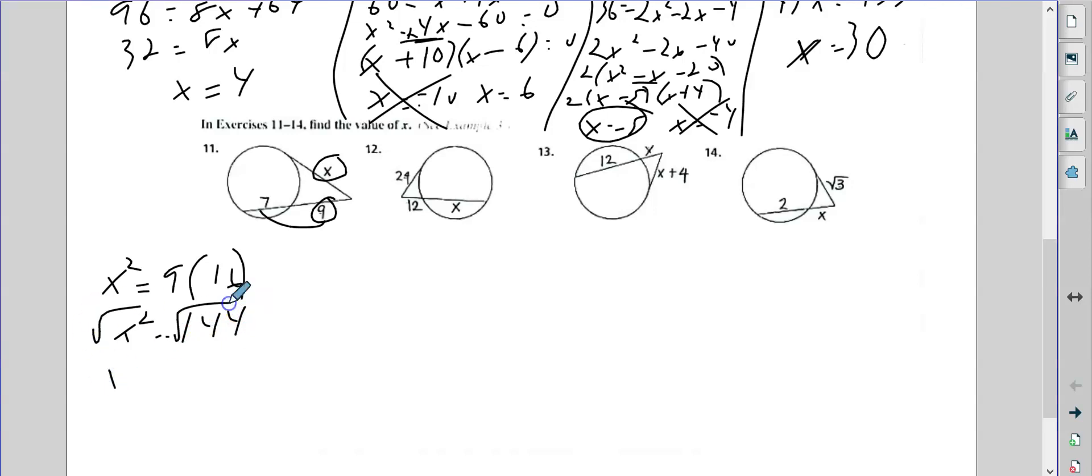You square root both sides. x equals 12. x equals negative 12. But again, we cannot have a measurement that's negative. So it's just 12.